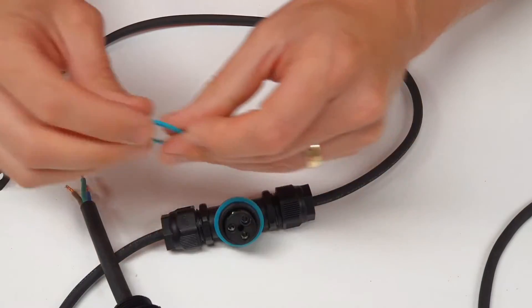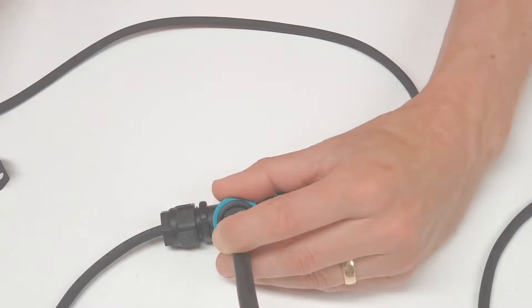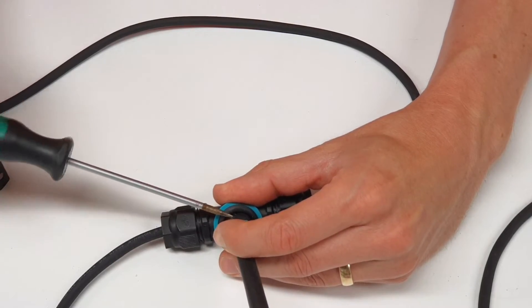Note as well there's another washer here to help with the IP ratings. Again that must be in place before making this connection. Then it's just a matter of connecting your cable here like so.